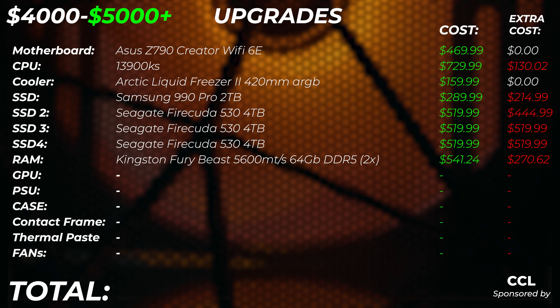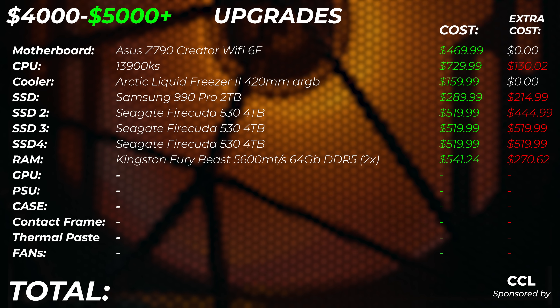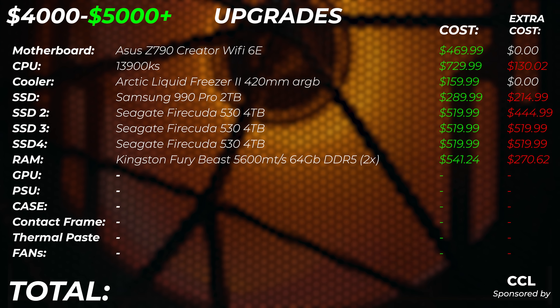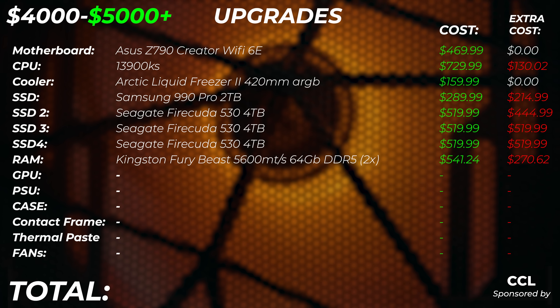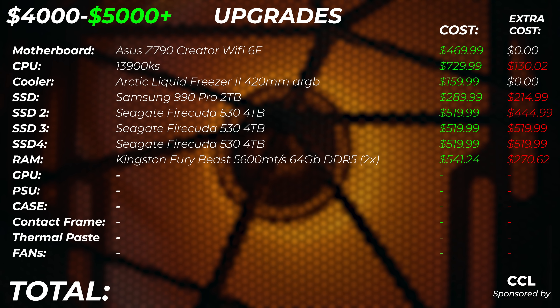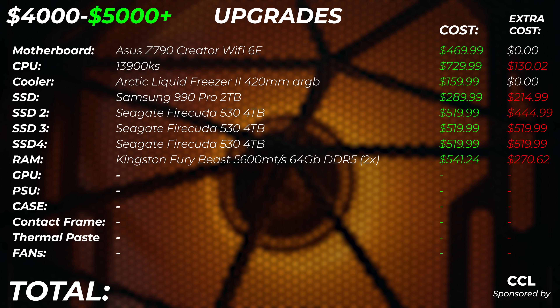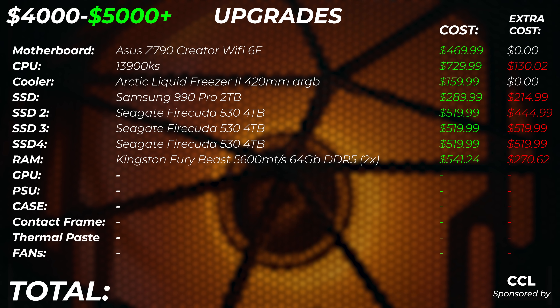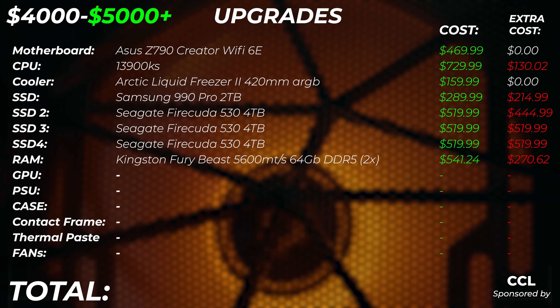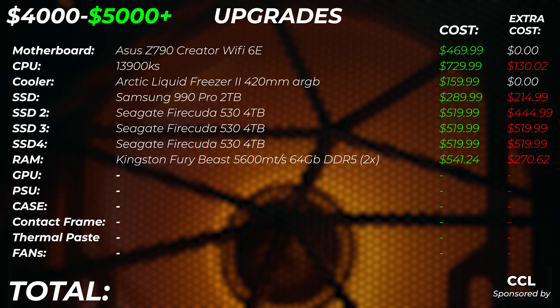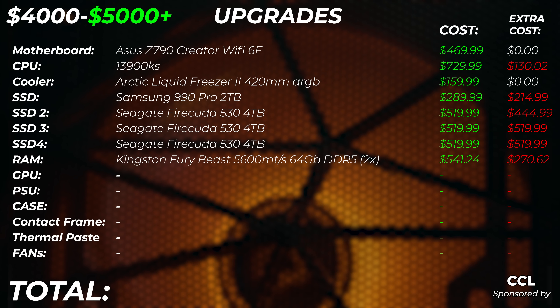For the RAM upgrade, we're going to 128 gigabytes of DDR5 — just twice the amount of the same sticks. Note that at 128 gigabytes you're probably not going to run XMP, so you'll have to drop the XMP setting. It doesn't really matter which RAM models you use at that point — it's DDR5 and 128 gigabytes, which is just insane.